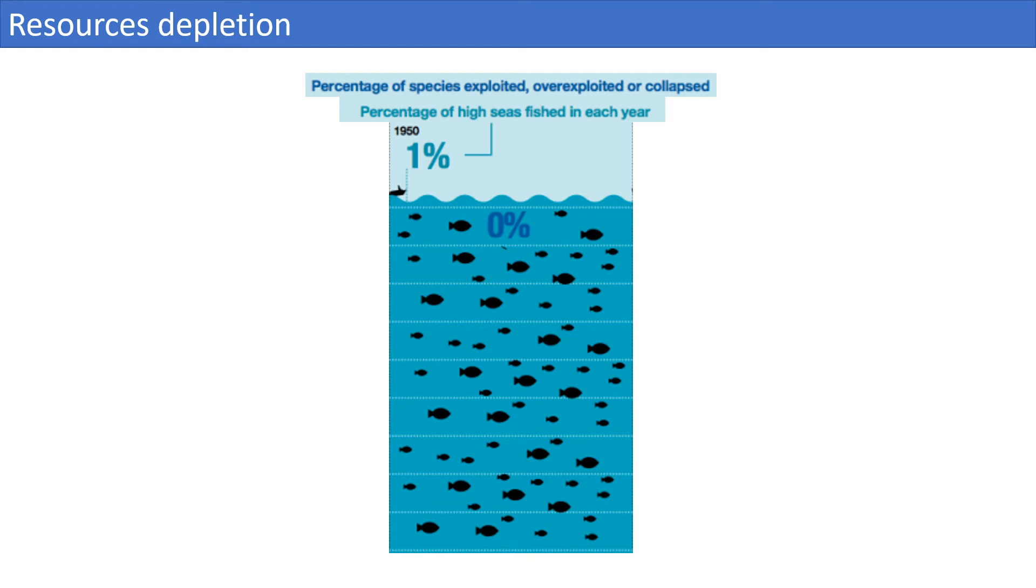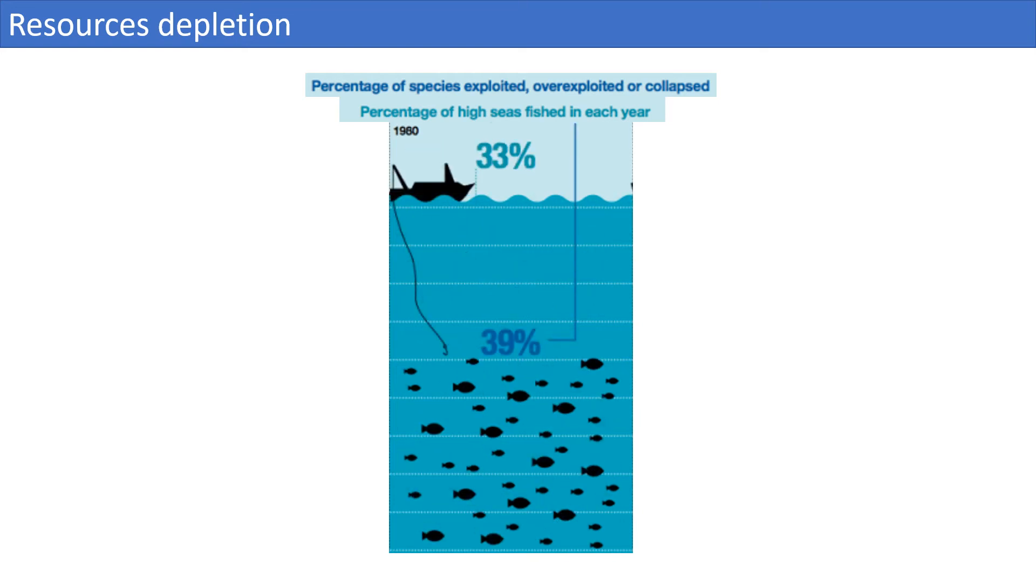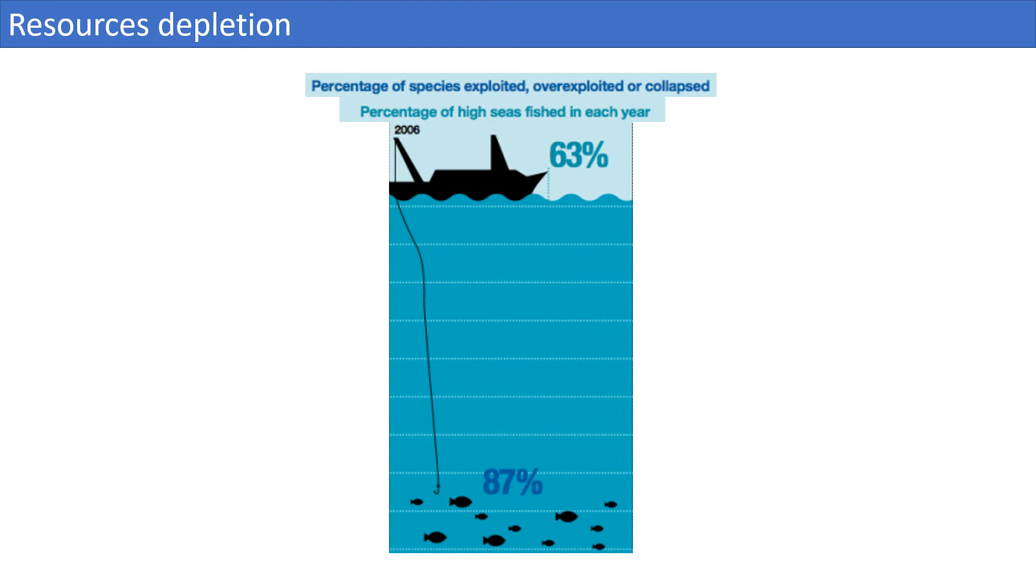The high-sea exploitation has increased to 33% in the 1960s, which subsequently led to a dramatic increase of exploited, overexploited, or collapsed species up to 40%. By 2006, two-thirds of the high sea levels were fished every year, which led to almost 90% of known species to be either overexploited or collapsed. This happens because the intensity of overfishing is much too high for the fish populations to naturally regenerate via their usual reproductive rates.